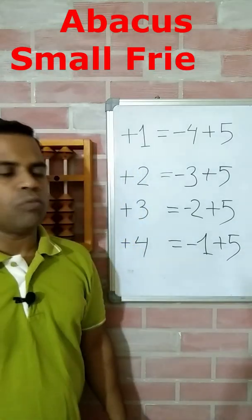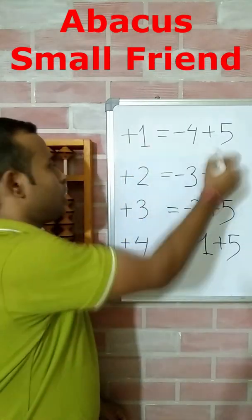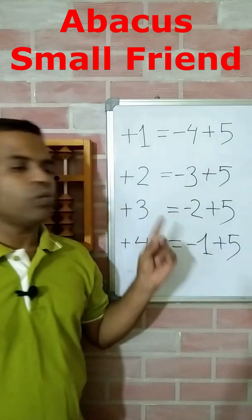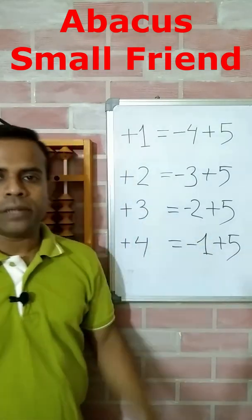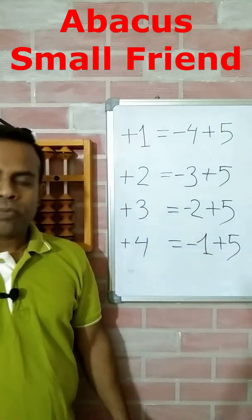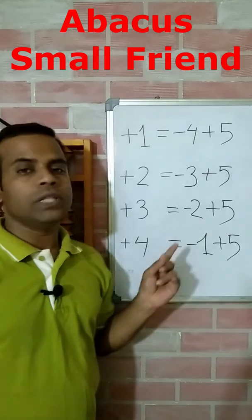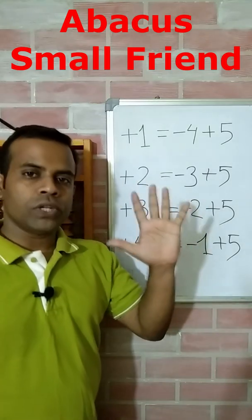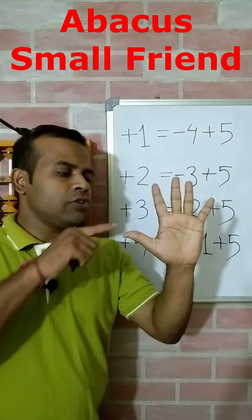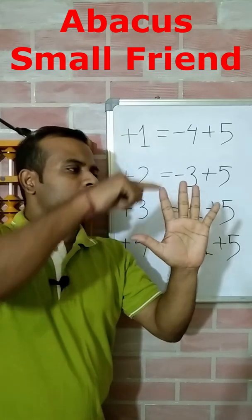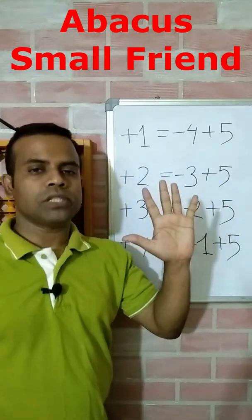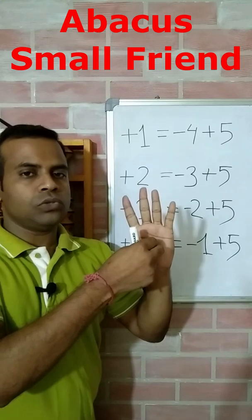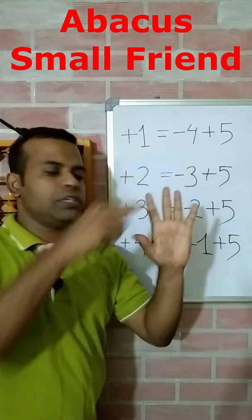These are the abacus small friend formulas. The proper way to teach your student about the small friend formula on abacus is to always use your hand. Tell your student that these are the five fingers, and this five is basically the small friend. If anyone faces any issue, the remaining fingers are its friends.